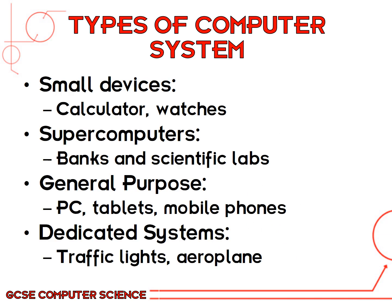There are a number of different types of computer system. For example, some of the more modern ones like a supercomputer are used in banks and scientific labs. These will be big powerful computer systems with a number of processors able to work on things together. We have small devices which are like calculators and watches. Some of the more familiar ones will be general purpose computers like PCs, tablets and mobile phones. There are also dedicated systems such as traffic lights and the things used for air traffic control inside an aeroplane and in the towers.